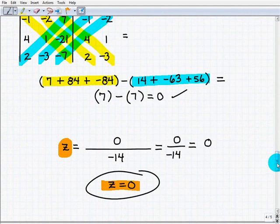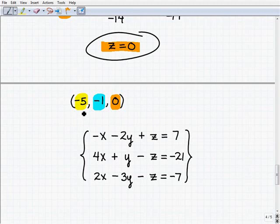So our solution set, recall, our first one was negative 5, which is x is equal to negative 5. We had y equal to negative 1, and we had z equal to 0. So we write it as an ordered triple. And there you go.